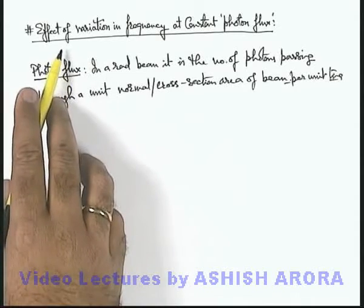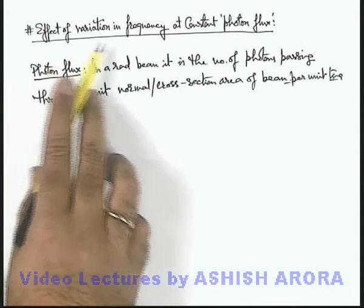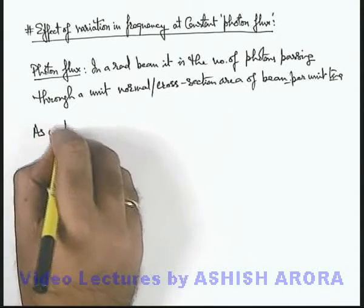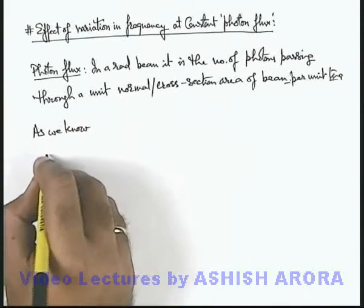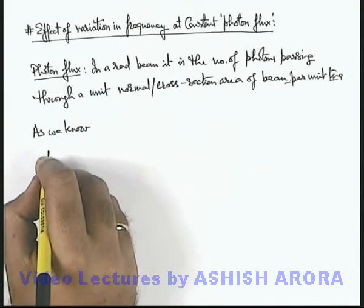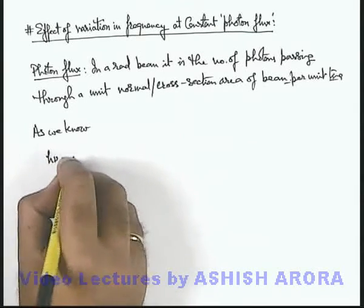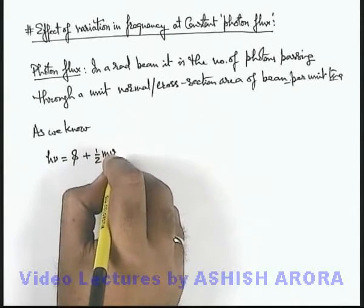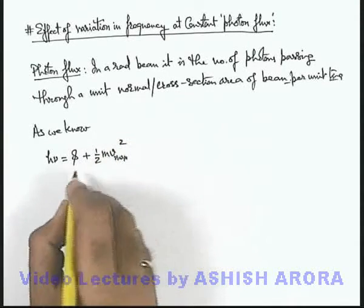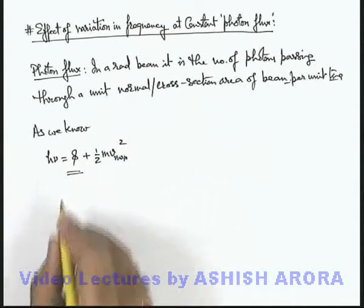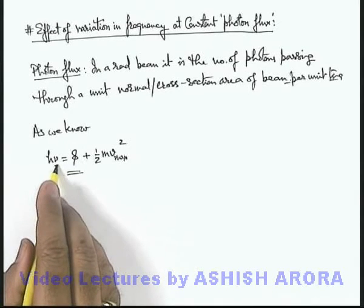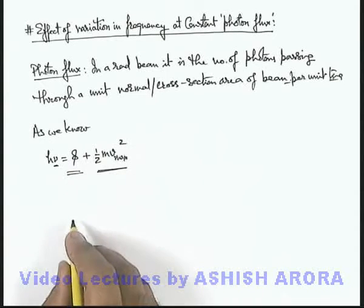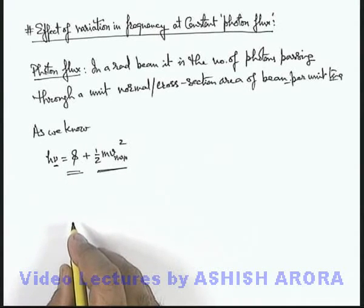Now in this situation, we are going to analyze the effect of variation in frequency. As we already know, when incident light frequency is ν, the photon energy hν is used in two parts: that is φ plus ½mv²max. Here φ is a constant, that is the work function of the metal. If we increase the frequency of incident light, that means we are increasing the maximum kinetic energy of the ejected electrons.